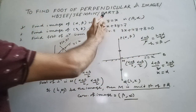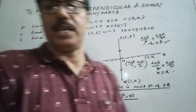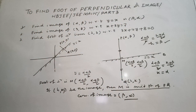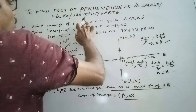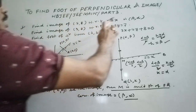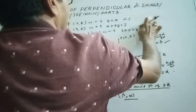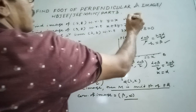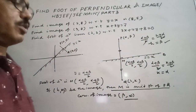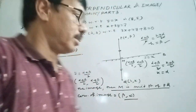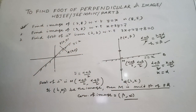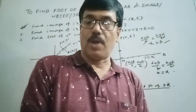If you change — that is, interchange — the x-coordinate and y-coordinate, you get the image. You can remember this as the key result: the image of (α, β) with respect to y = x is (β, α). You can write this result directly if the line is y = x.